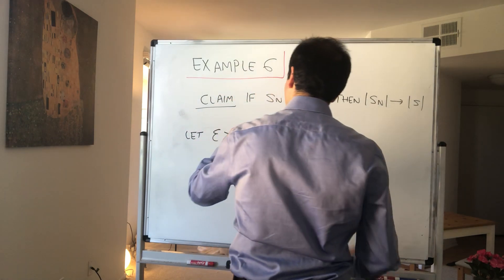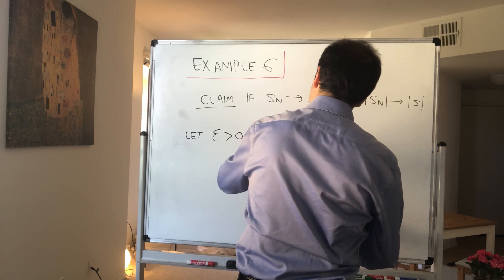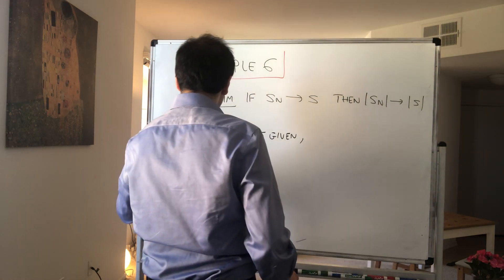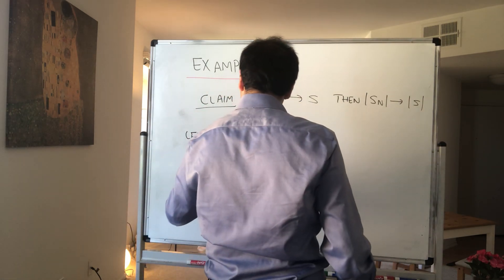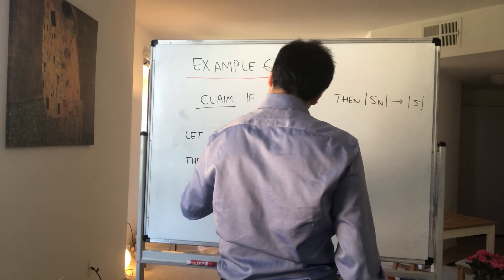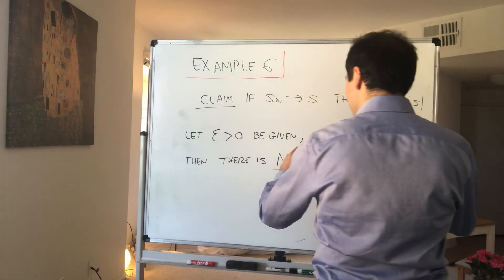So let epsilon positive be given. Then we know, because s_n converges to s, there is some number capital N such that